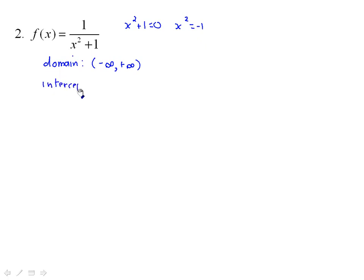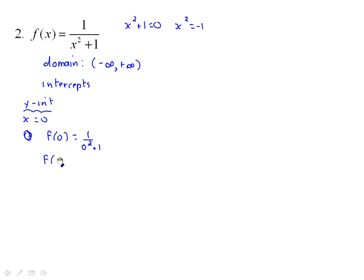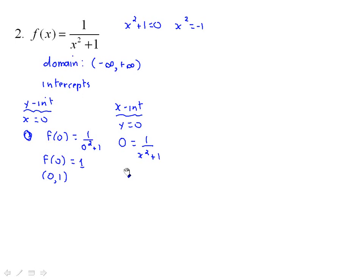The intercepts: for the y-intercept, set x equal to 0. f(0) is equal to 1 over 0 squared plus 1, so f(0) is equal to 1 over 1, which is just 1. So the y-intercept is (0, 1). For the x-intercept, set y equal to 0: 0 equals 1 over x squared plus 1. There's no way this can equal 0, so there are no x-intercepts.